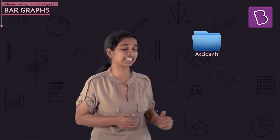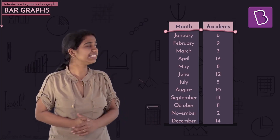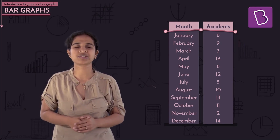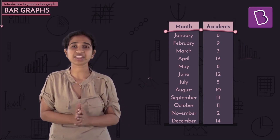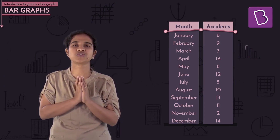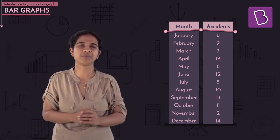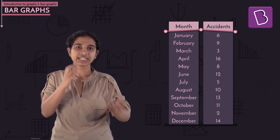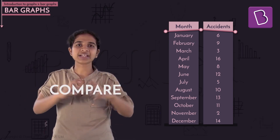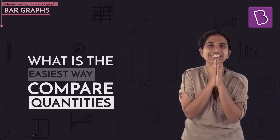Let's get started with the first dataset — accidents that happened on a highway in a year. This data shows the different months from January to December and the number of accidents on a particular highway. What we most likely want to know is how the accidents compare across the months, so something that helps you compare quantities would be a useful way to represent this.